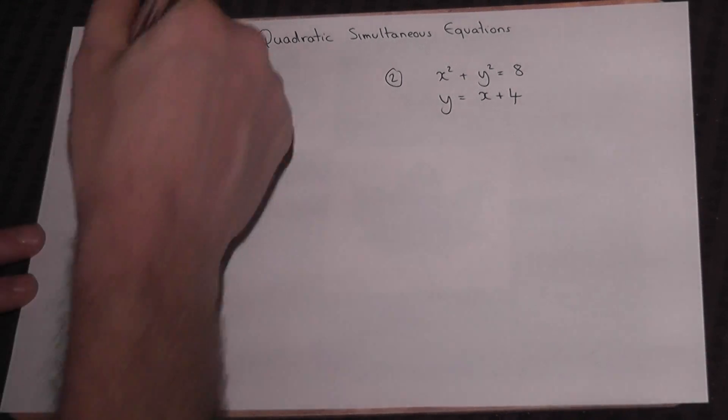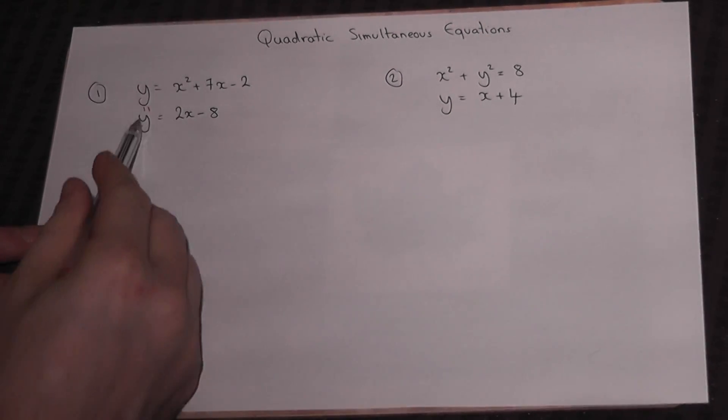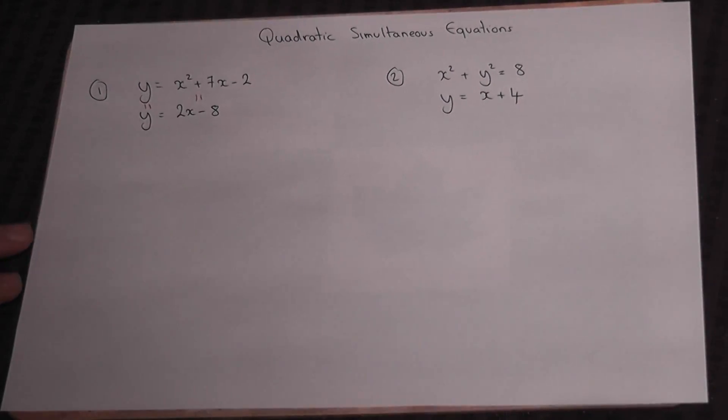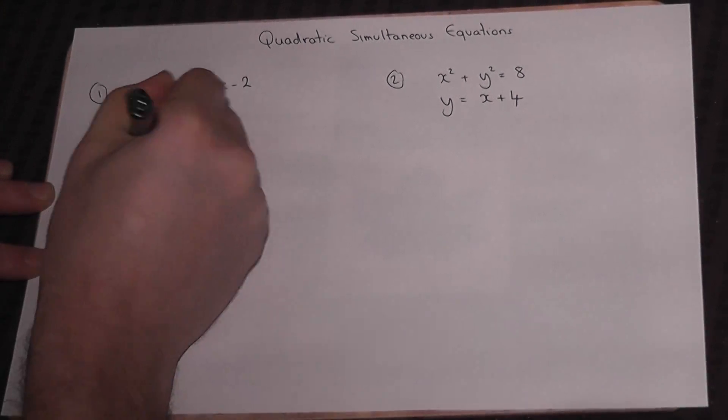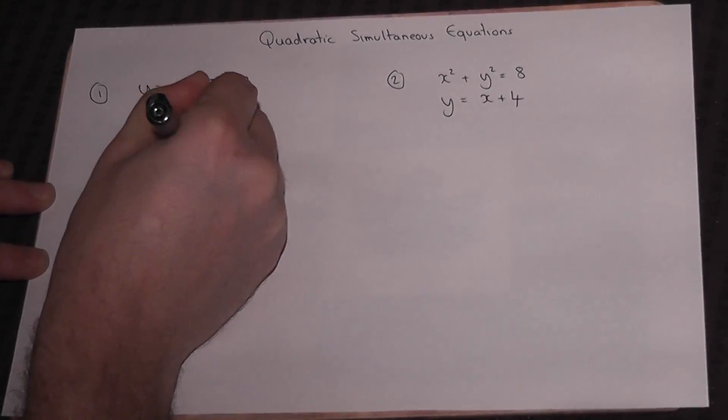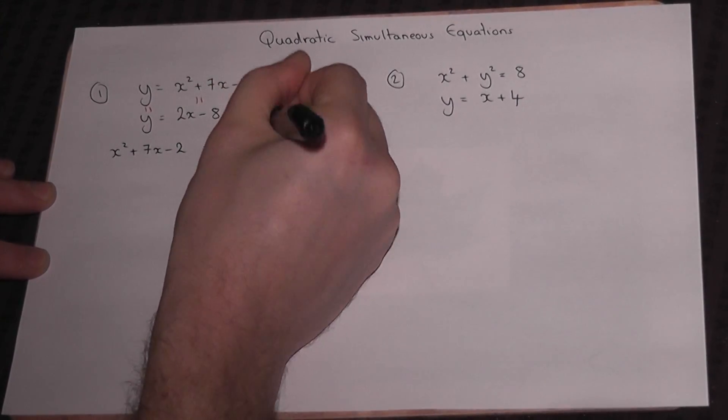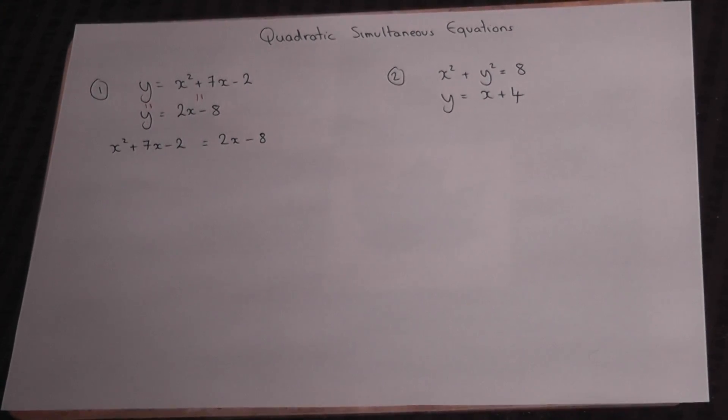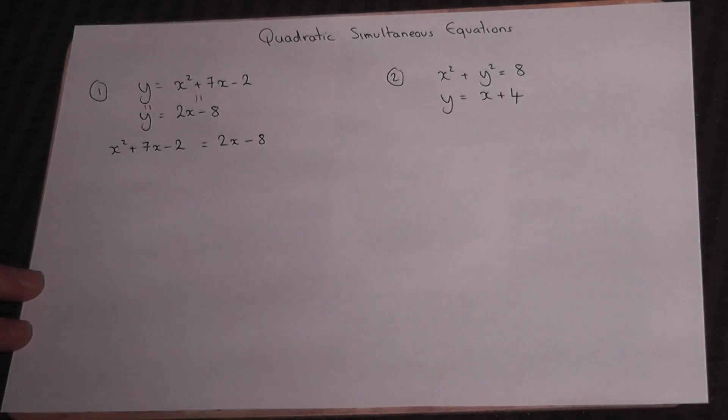In other words, where are the Y's equal? But if the Y's are equal, then these two expressions here must also be equal. So the question is asking where does x² + 7x - 2 equal 2x - 8? To solve this equation, you need to get all your terms to one side and have it equal to 0.